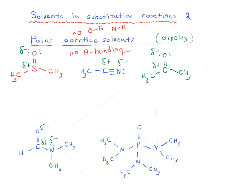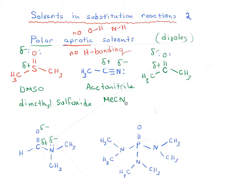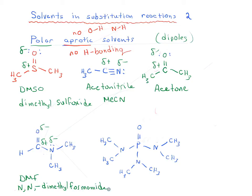Each of these solvents will have an impact on nucleophilicity, as we'll see. The solvents have names: this is called dimethyl sulfoxide or DMSO; this is called acetonitrile, sometimes abbreviated MeCN; this is called acetone, commonly used as a paint thinner or nail polish remover; this is DMF, or N,N-dimethylformamide; and finally this one is called HMPA, or hexamethylphosphorus triamide. These are all examples of polar aprotic solvents — they're liquids, they're polar, but there are no O-H or N-H bonds.